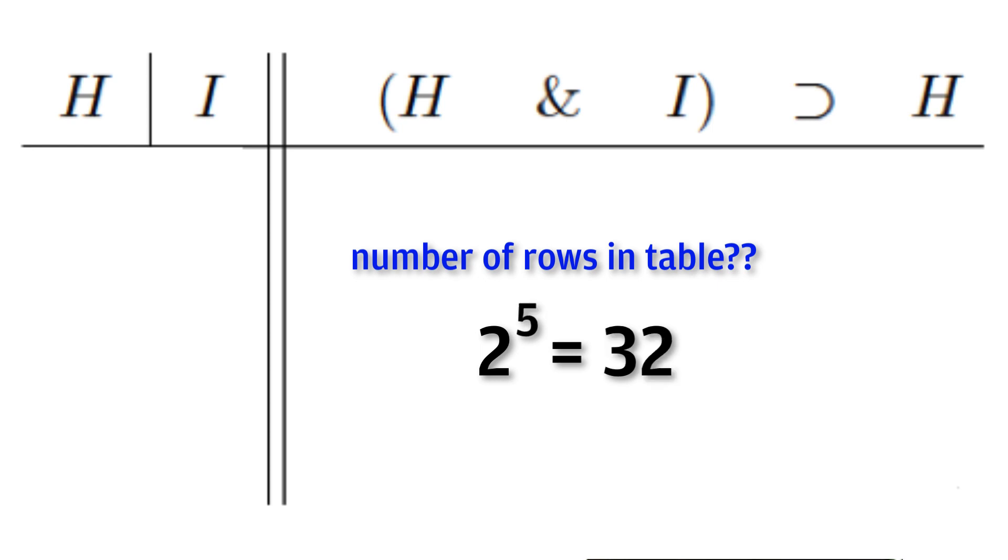If we had five variables, our table would need 32 rows, two to the fifth power. Our example sentence has two variables, H and I, so we have to use a four row truth table.